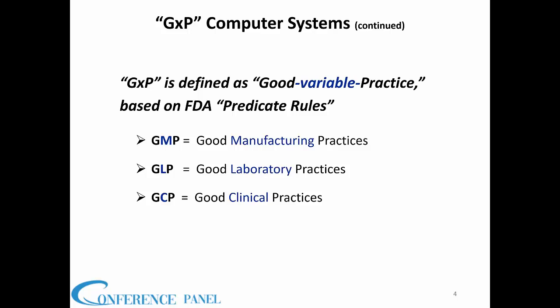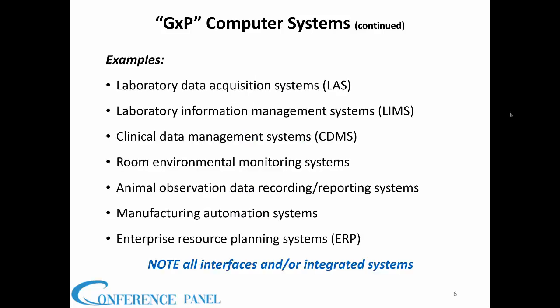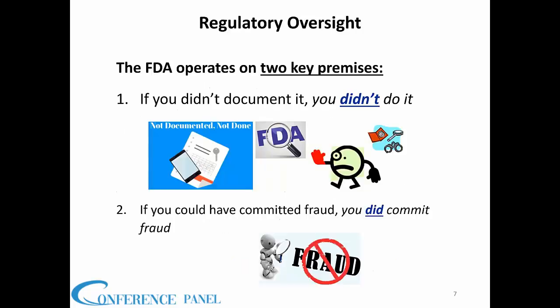GXP are the predicate rules from FDA, defined as good variable practice. It can be good manufacturing practice, good laboratory practice, or good clinical practice. These are examples of typical FDA regulated GXP systems. The FDA operates on key premises: if you didn't document something, you didn't do it — you get no credit. And if you could have committed fraud, they will assume you did commit fraud.